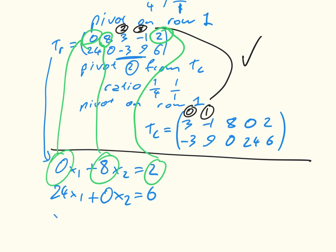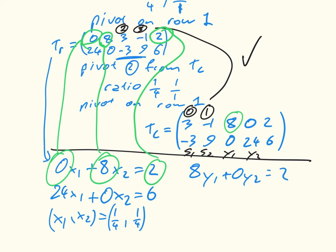Our old friend, a quarter, a quarter. And similarly, we have 8y1, because remember, this is now s1, s2, y1, y2. So 8y1 plus 0y2 is equal to 2, and 0y1 plus 24y2 is equal to 6. So y1, y2 is equal to a quarter, a quarter.